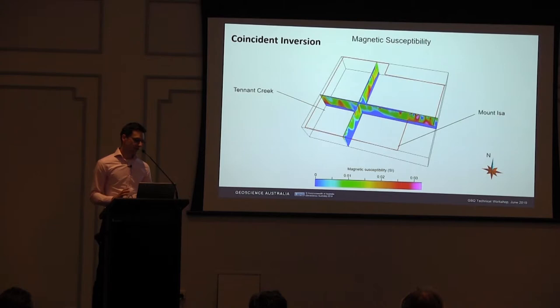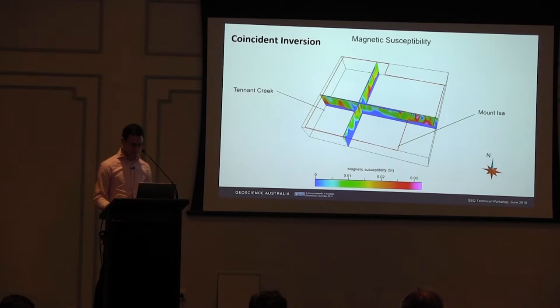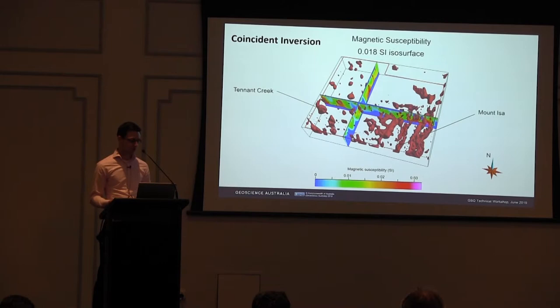In the middle, the values vary smoothly between blue through to hot colours. That's just the nature of this style of inversion — you create a smooth model where properties vary smoothly from high to low. We can interrogate these models in different ways. Individually, they tell us something about the volume of magnetically susceptible material and the trend of the geology.